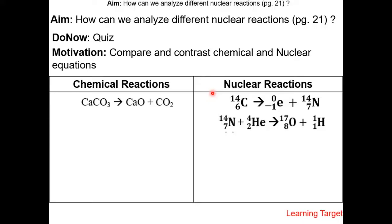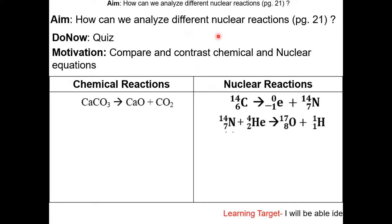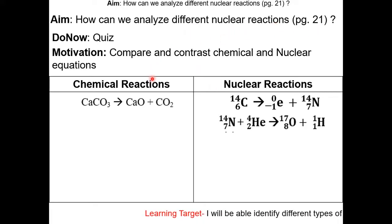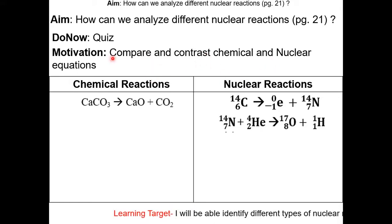This is my fifth video lesson for unit 9. In this lesson, we'll be analyzing different nuclear reactions. Go to page 21 in the class packet. But first, we'll compare and contrast chemical and nuclear equations.